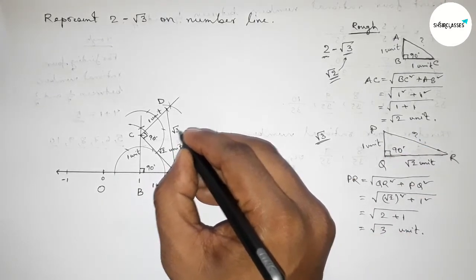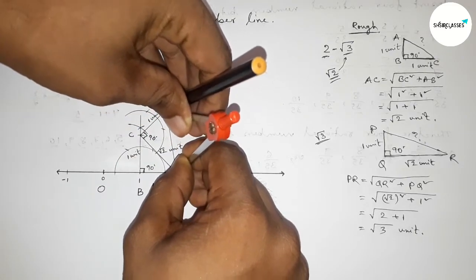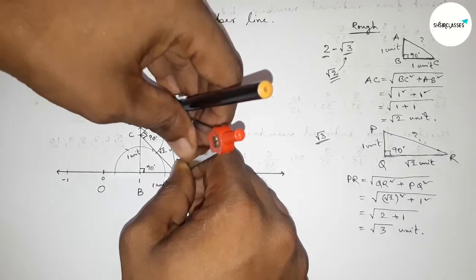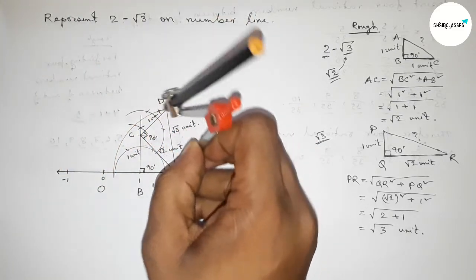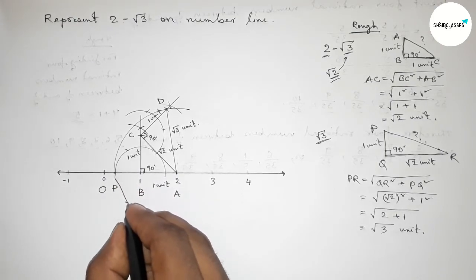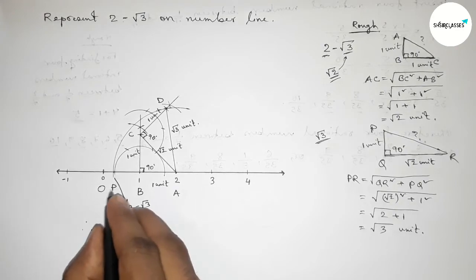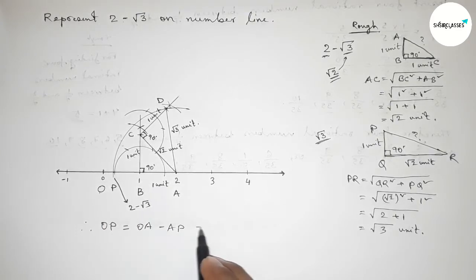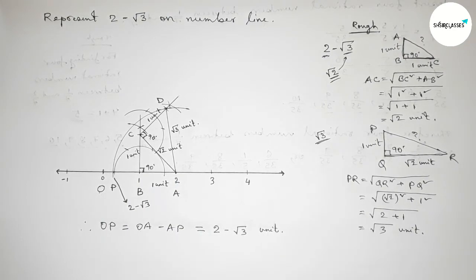From this we can say that AD equals root 3 unit length. Now taking the length AD equal to root 3 unit by using compass, and drawing an arc through point D which meets the number line at a point. Taking this point as P. Therefore OP equals OA minus AP. We know OA equals 2 unit and AP equals root 3 unit, so OP equals 2 minus root 3 on the number line.